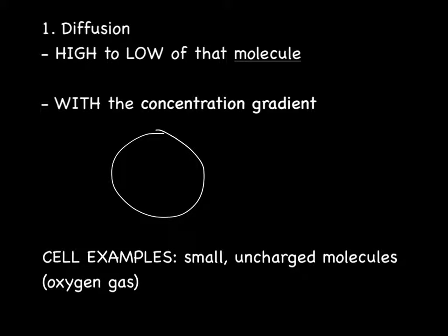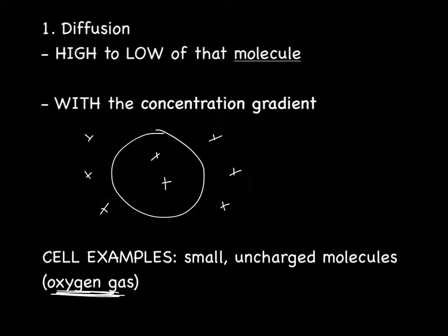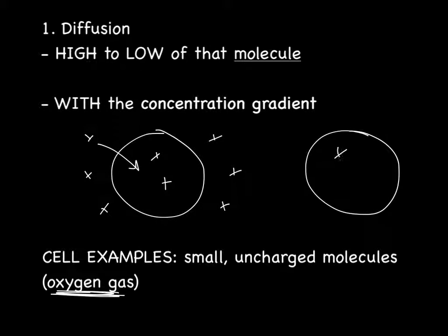This happens in cells as well. If I have a cell with some small uncharged molecules like oxygen gas, and those molecules are outside the cell in higher numbers than inside, we have a concentration gradient. They're going to move from high to low concentration — in this case, into the cell. They move until they reach equilibrium, which would be four molecules inside and four molecules outside. They can continue to move in and out, but will stay pretty even unless a concentration gradient builds up again.